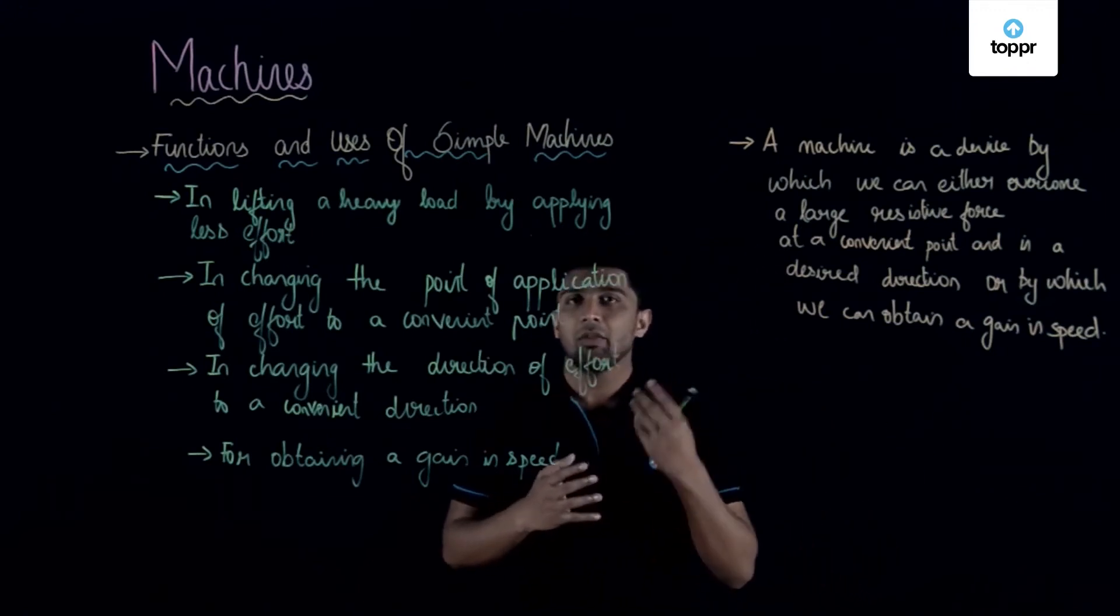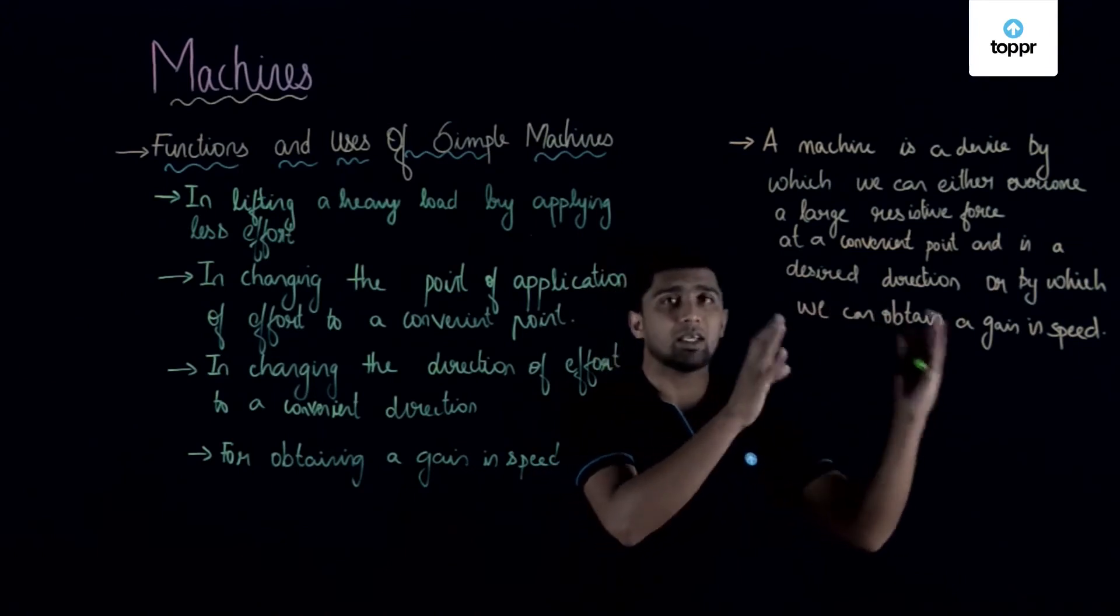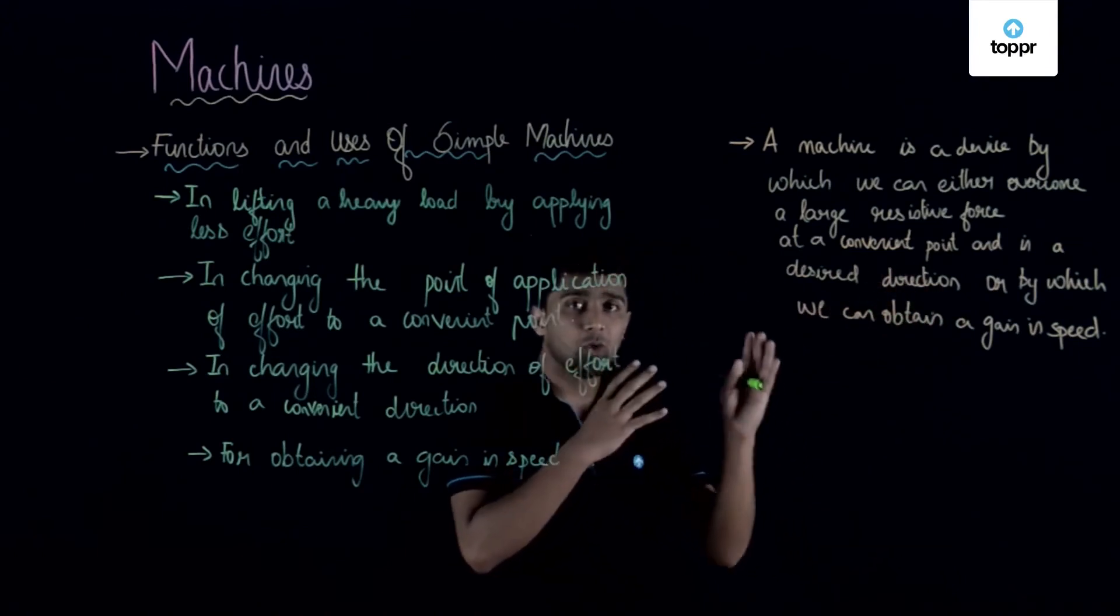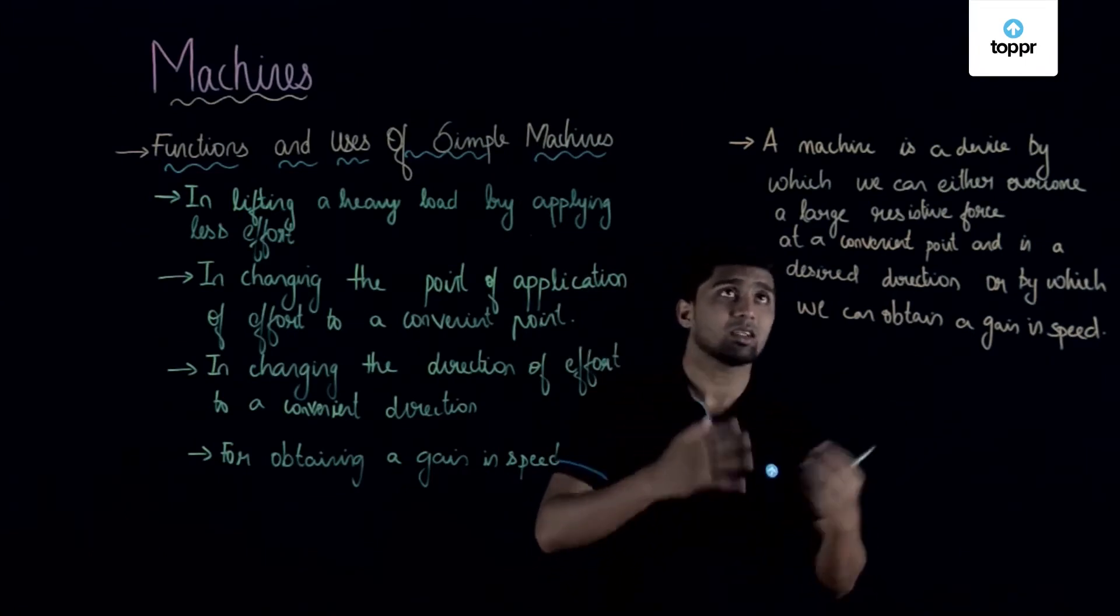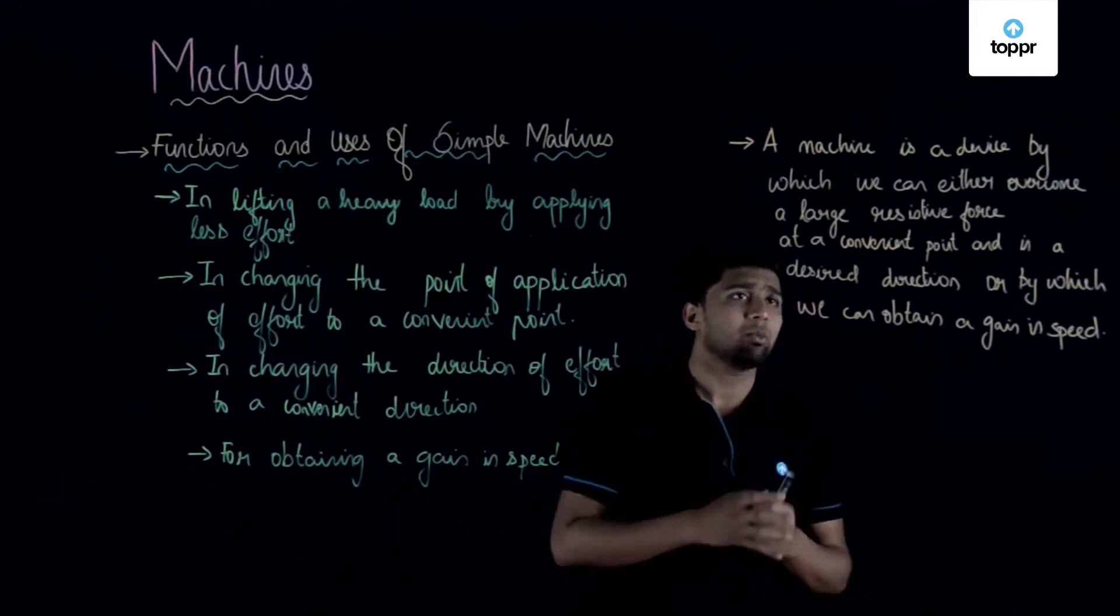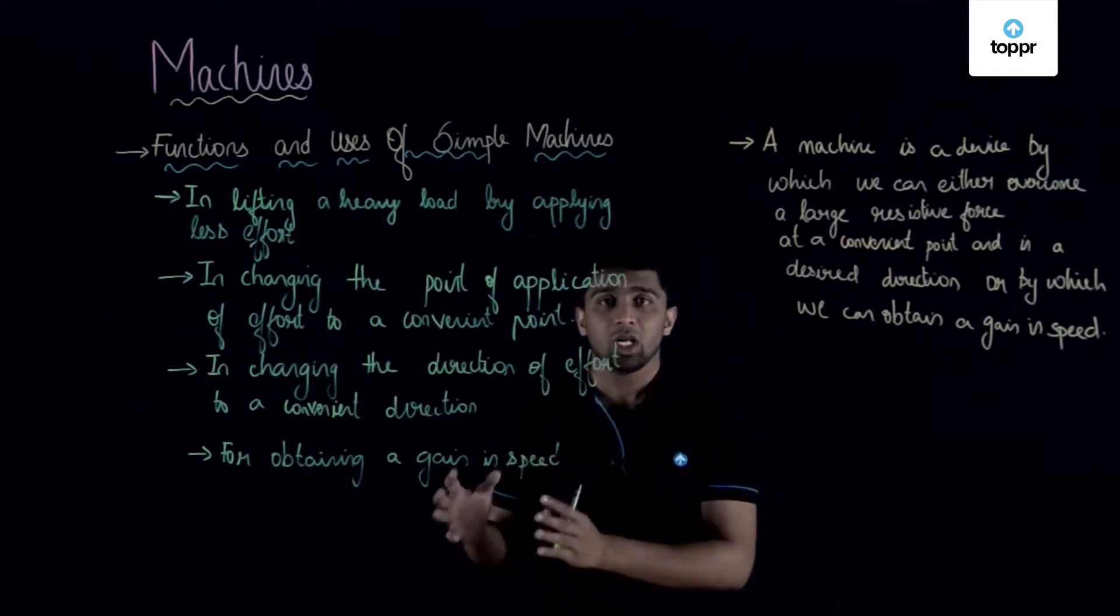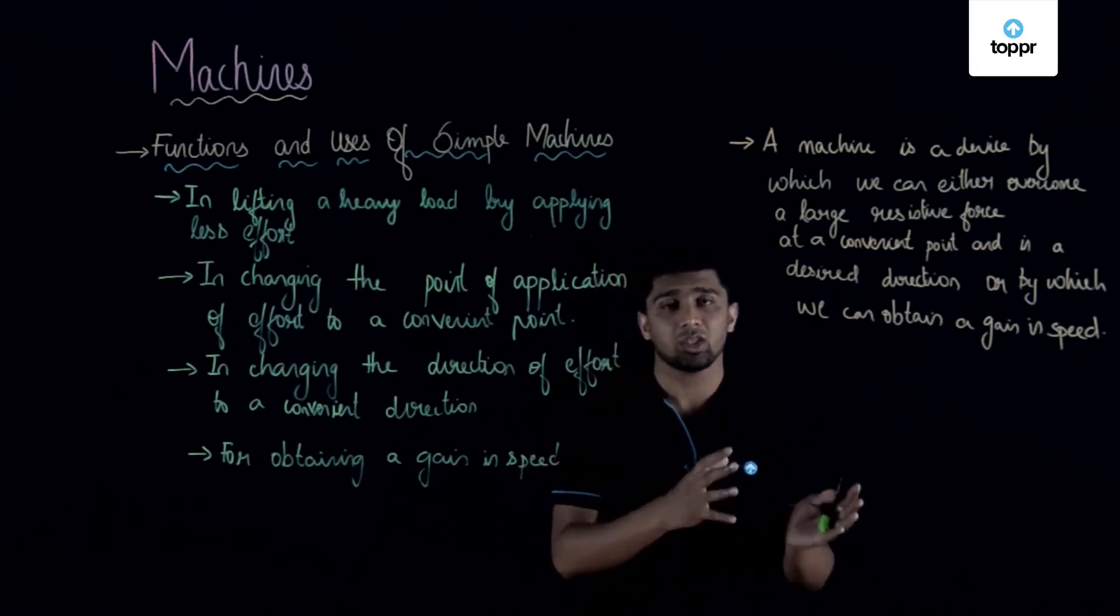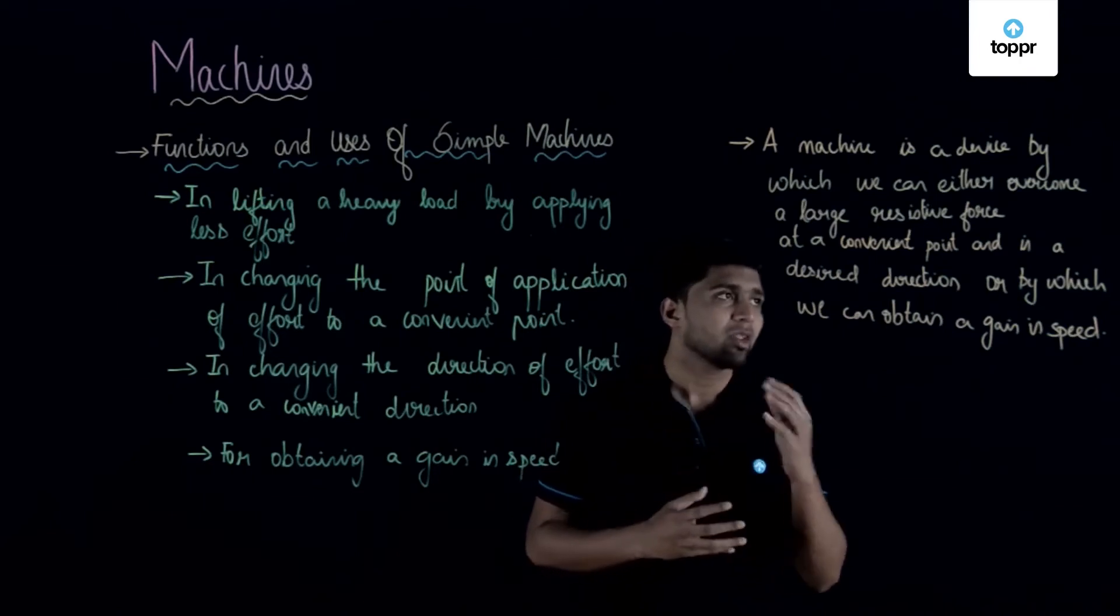So by using machine, there are many uses. The definition itself says that it is a device which we can either overcome the higher resistive force or a large resistive force of a body at a convenient point and in a desired direction. By using machine, it becomes easier.